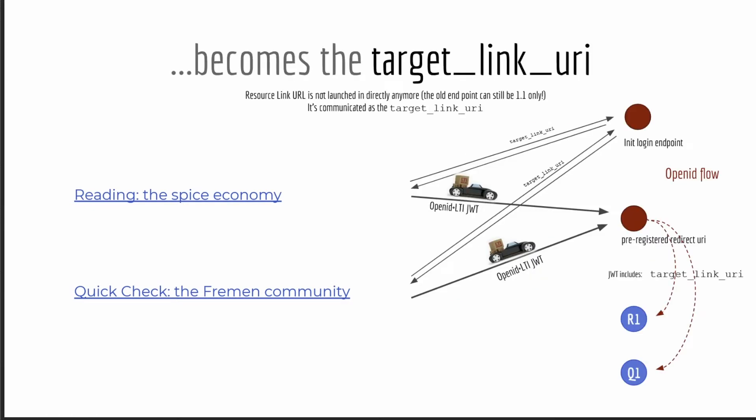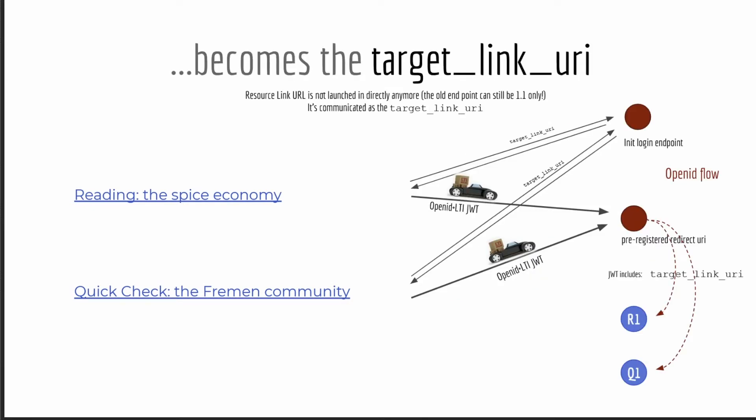With LTI Advantage, things are quite different. The launch URL is no longer used to launch into the tool. Instead, the URLs you've registered for the OpenID flow are used — your initiate login endpoint and pre-registered redirect URIs. The launch URL is now passed as a parameter on those requests: in the initiate login, it's passed as a target link URI. This is unsigned, so you can't verify it hasn't been compromised, but it's still passed so you can decide where to route your redirect URI.